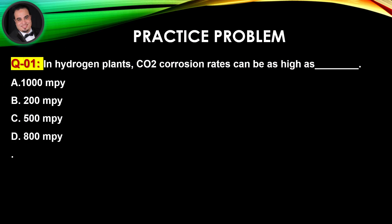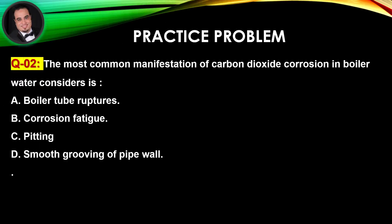Practice time. Question number one: In hydrogen plants, CO2 corrosion rates can be as high as — Answer is A. Question number two: The most common manifestation of carbon dioxide corrosion in boiler water condensate is — Answer is C.